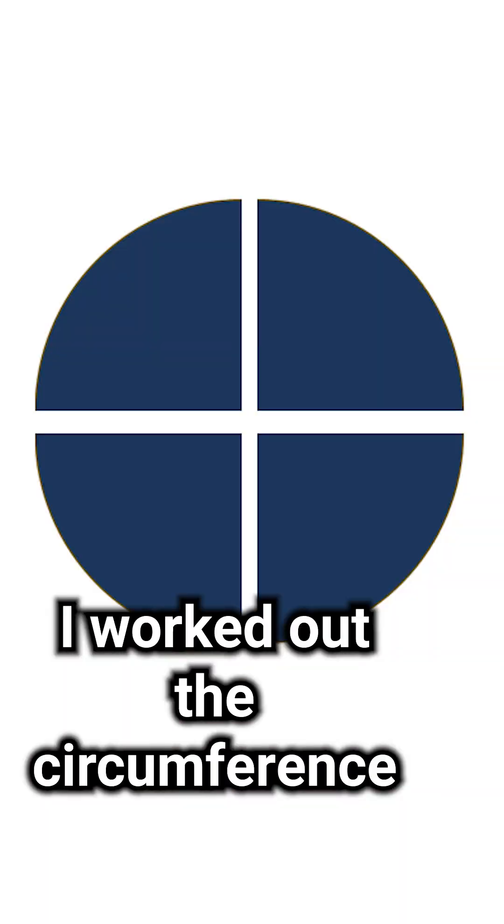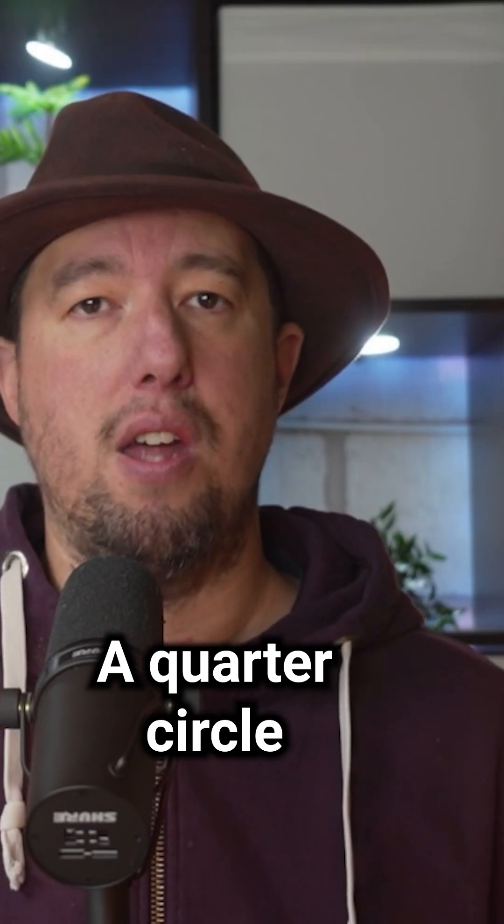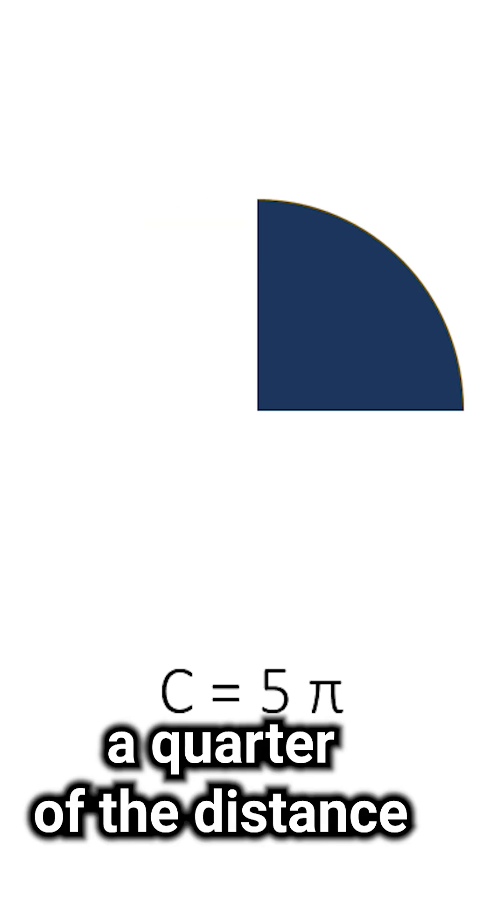But then I worked out the circumference of the full circle by multiplying the diameter by pi. A quarter circle will only be a quarter of the distance.